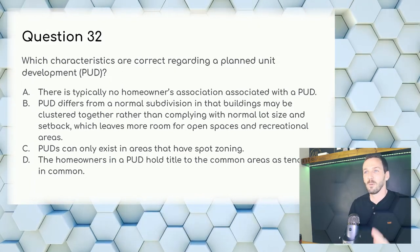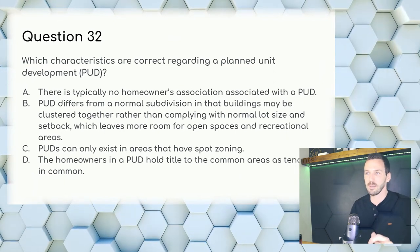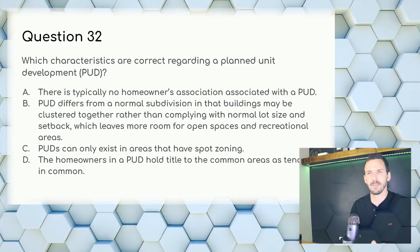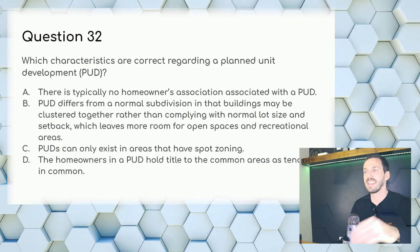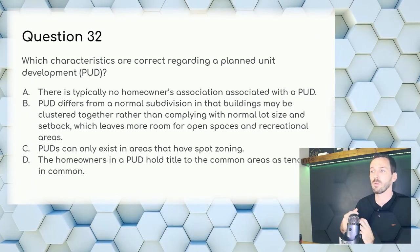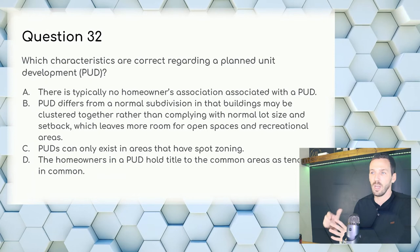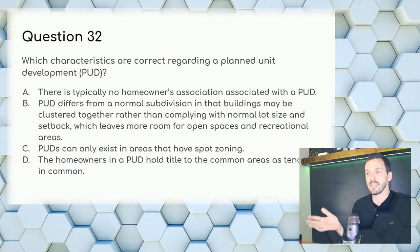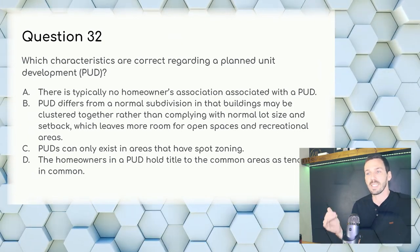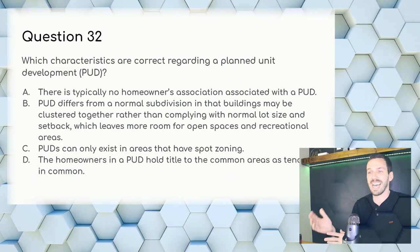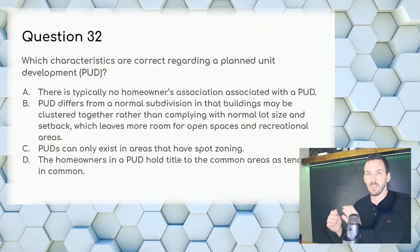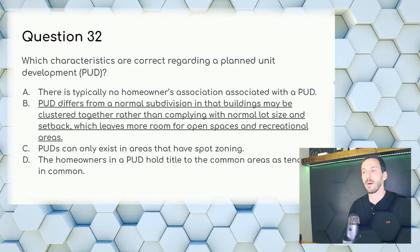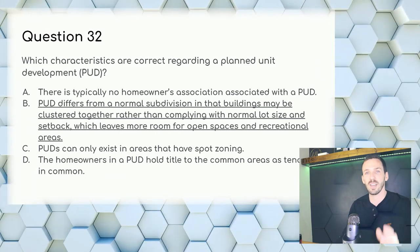Question 32: Which characteristics are correct regarding a planned unit development (PUD)? Part of a PUD is cluster zoning, where houses are grouped so there can be more green space, parks, and trails in a neighborhood. Answer: B — a PUD differs from a normal subdivision in that buildings may be clustered together rather than complying with normal lot size and setback requirements, leaving more room for open spaces and recreational areas.